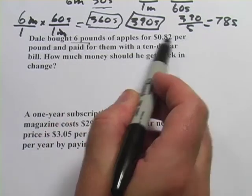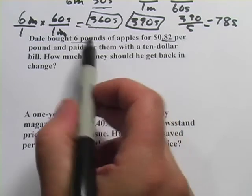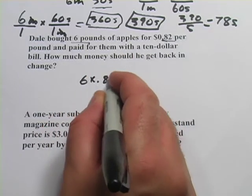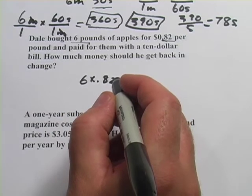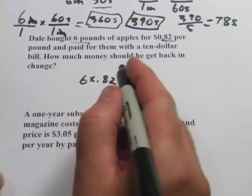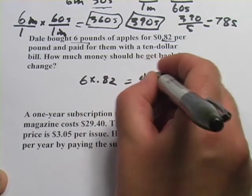How much did he have to pay? He bought six pounds at 82 cents per pound, so we need to multiply. Six times 0.82. You can do that on your calculator, and that comes out to $4.92.